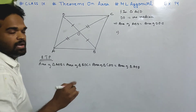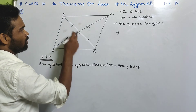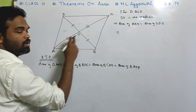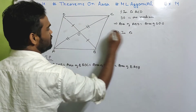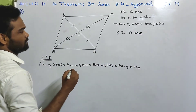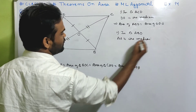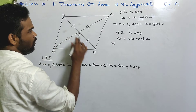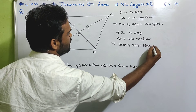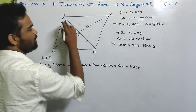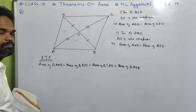Number two: in triangle ABD, BO equals OD, which means AO is the median. Therefore area of triangle AOB equals area of triangle AOD. Similarly in triangle ABC, AO equals OC, so BO is the median. Therefore area of triangle AOB equals area of triangle BOC.